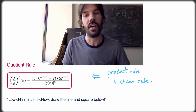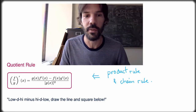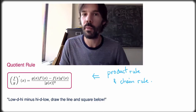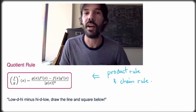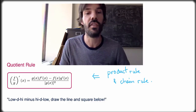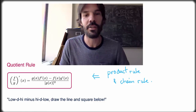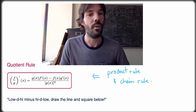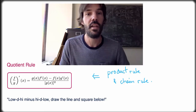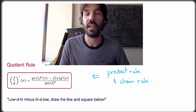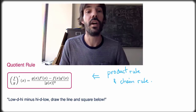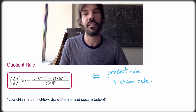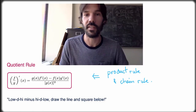So these are the main rules for now that we'll use to calculate derivatives: the power rule, constant multiple rule, sum and difference rules, product rule, and quotient rule. You have to remember these rules, and most importantly you have to be able to use them. Do tons of examples calculating derivatives using all of these rules — we'll do many examples in class and during the assignments.